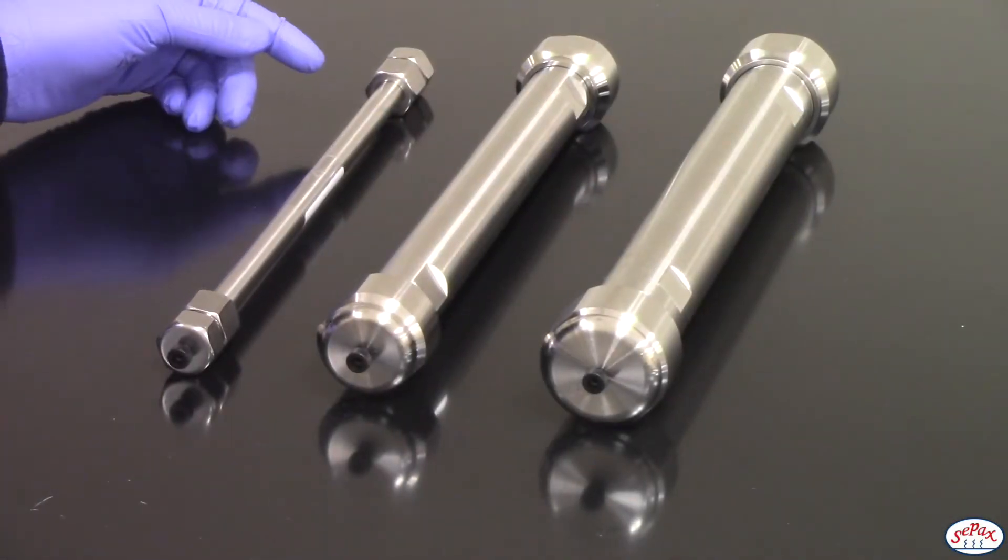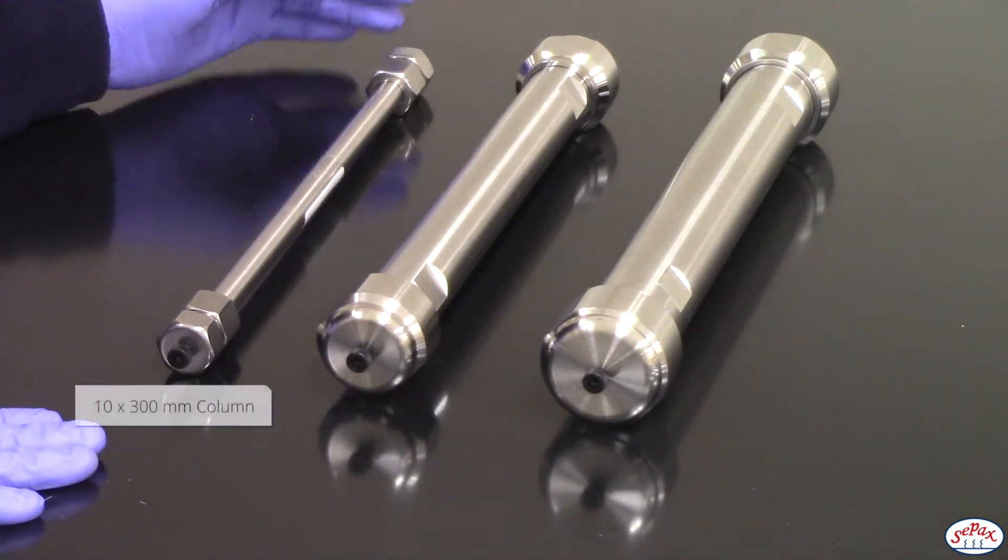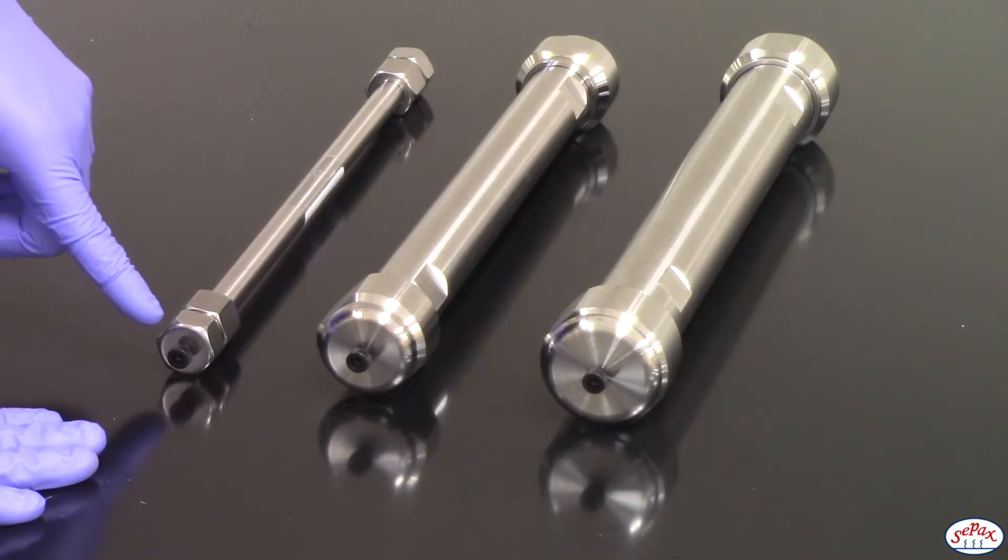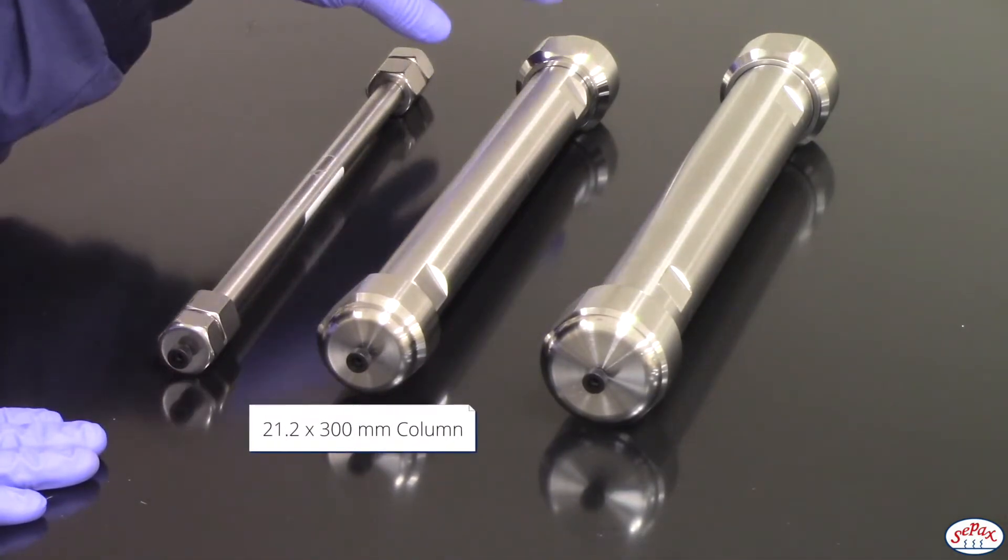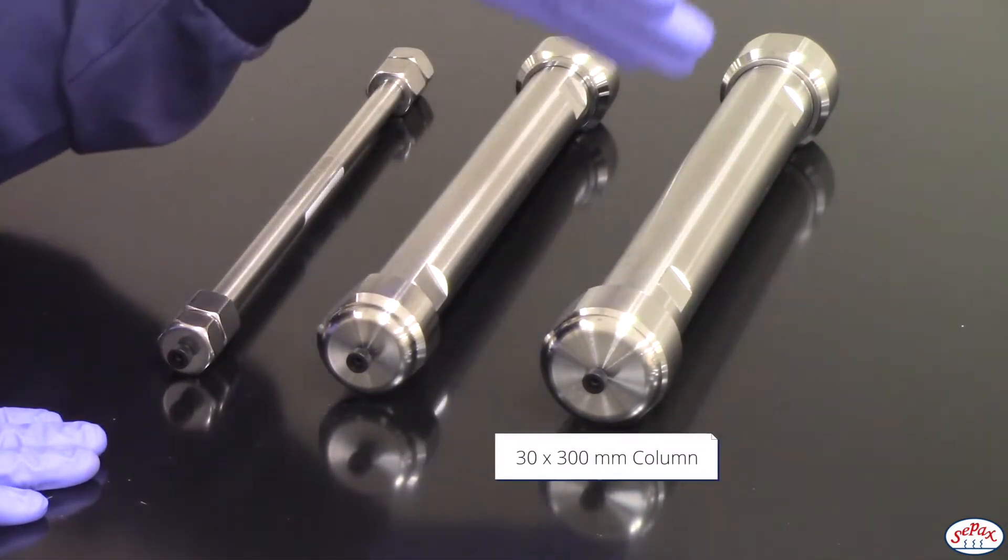Here we have several of the column dimensions that Setpacks offers. We have a 10 by 300 millimeter column, we offer 21.2 by 300 millimeter, and we also offer 30 by 300 millimeter.